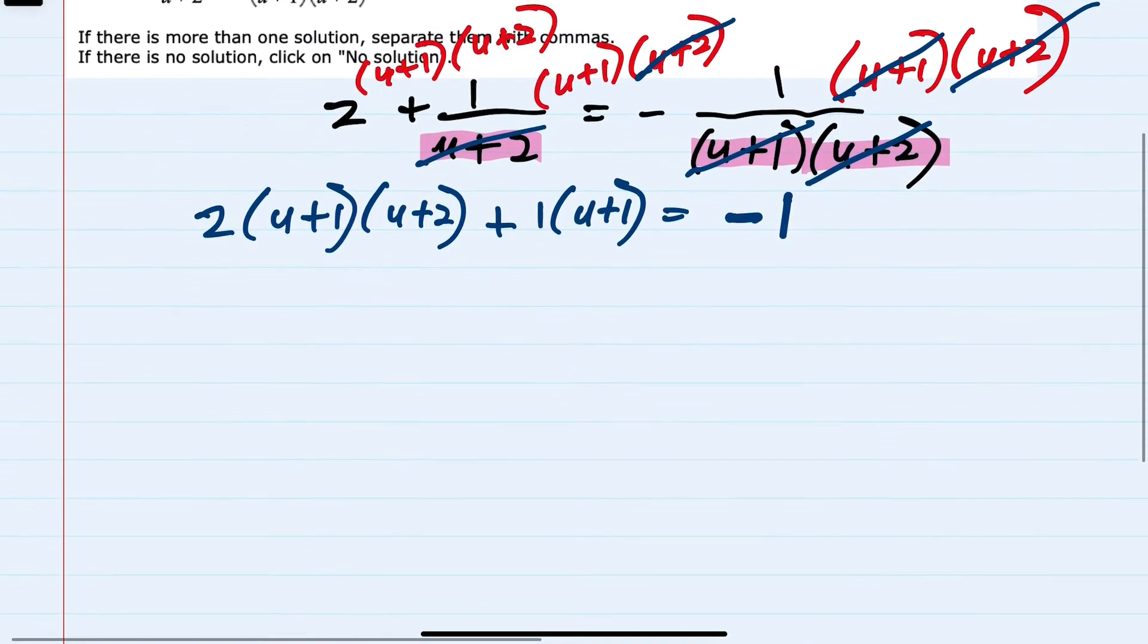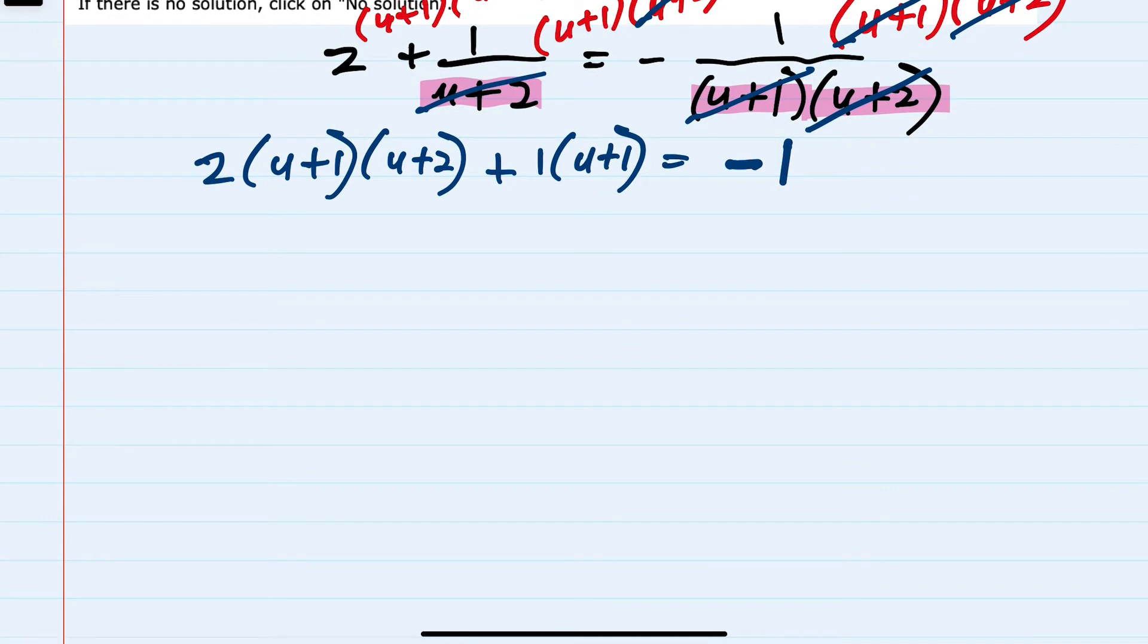From here, we can begin to simplify. First, doing the multiplication here, u plus 1 times u plus 2. If we FOIL this, this is u squared plus 2u plus 1u plus 2. In the second term, I'm just distributing a 1, so this would just be u plus 1 equals, the right-hand side is still negative 1.